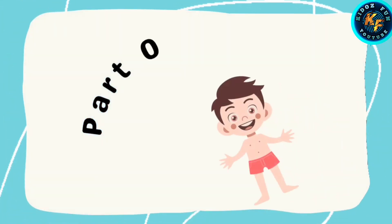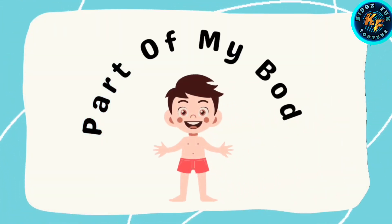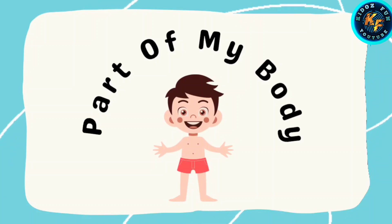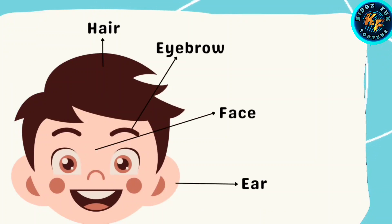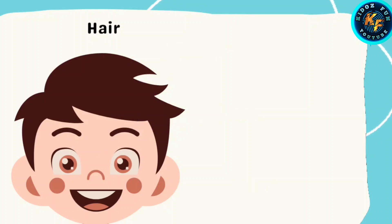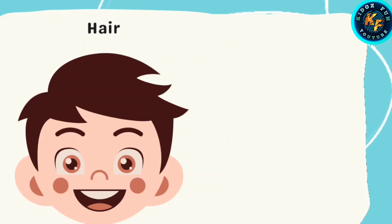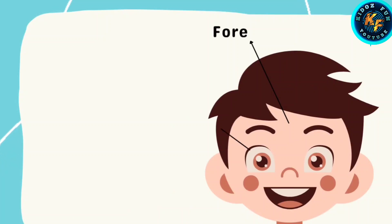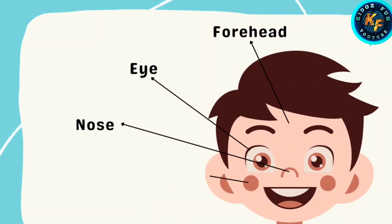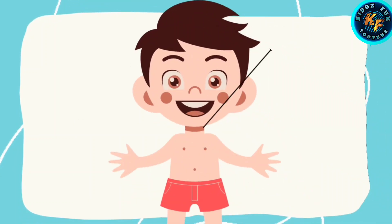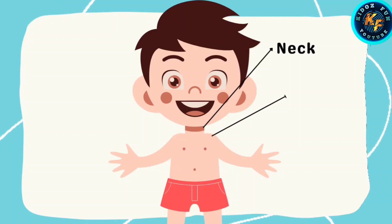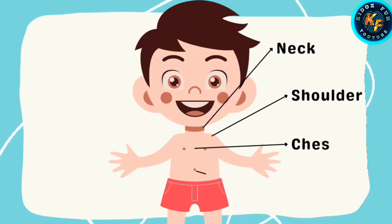Let's revise again — parts of my body. Hair, eyebrow, face, ears. Forehead, eye. Nose, cheek. Mouth. Neck, shoulder. Chest.